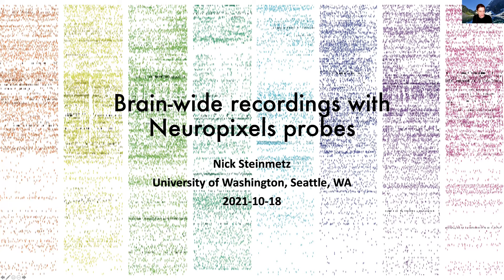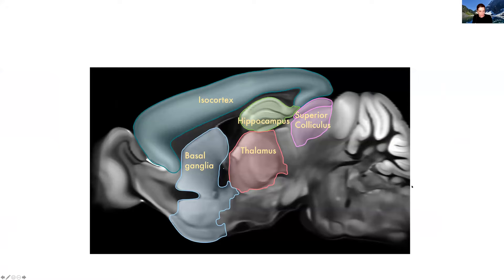I don't think I probably need to motivate this too much, but just to motivate a little bit why I think you should care about recording from multiple structures in the brain. Here is a sagittal slice of a mouse brain where I've highlighted and labeled a few of the key regions of the forebrain and midbrain from cortex, thalamus, basal ganglia, colliculus, hippocampus.